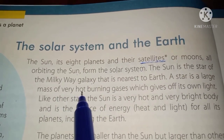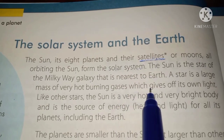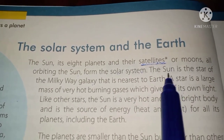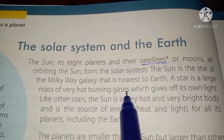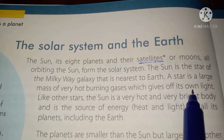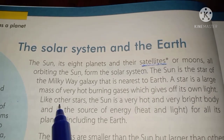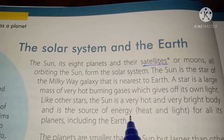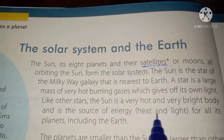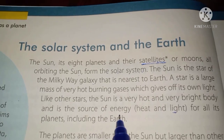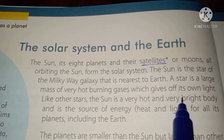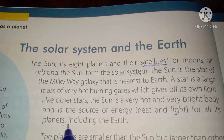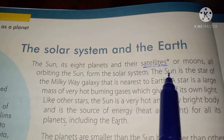A star is a large mass of very hot burning gases which gives off its own light, just like the sun. The sun is also a star and consists of very hot burning gases which give off their own light. The sun is a very hot and very bright body and is the source of energy that gives heat and light for all its planets, including the earth.